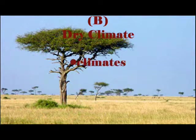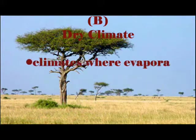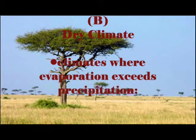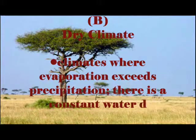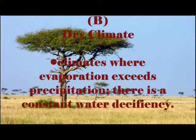Next is the dry climate, where evaporation exceeds precipitation. There is a constant water deficiency.